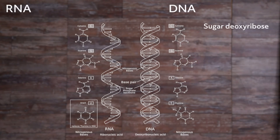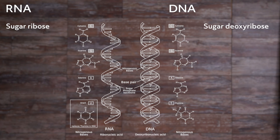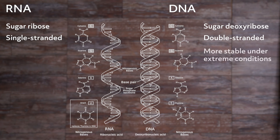Let's review and compare DNA and RNA. DNA has the sugar deoxyribose, while RNA has the sugar ribose. The difference between ribose and deoxyribose are fairly subtle — ribose has one more OH group than deoxyribose, and that is the only difference. Though the contrast is subtle, the difference changes the entire function. DNA is double-stranded, while RNA is single-stranded. DNA is more stable under extreme conditions, but RNA is not very stable due to it only being single-stranded.